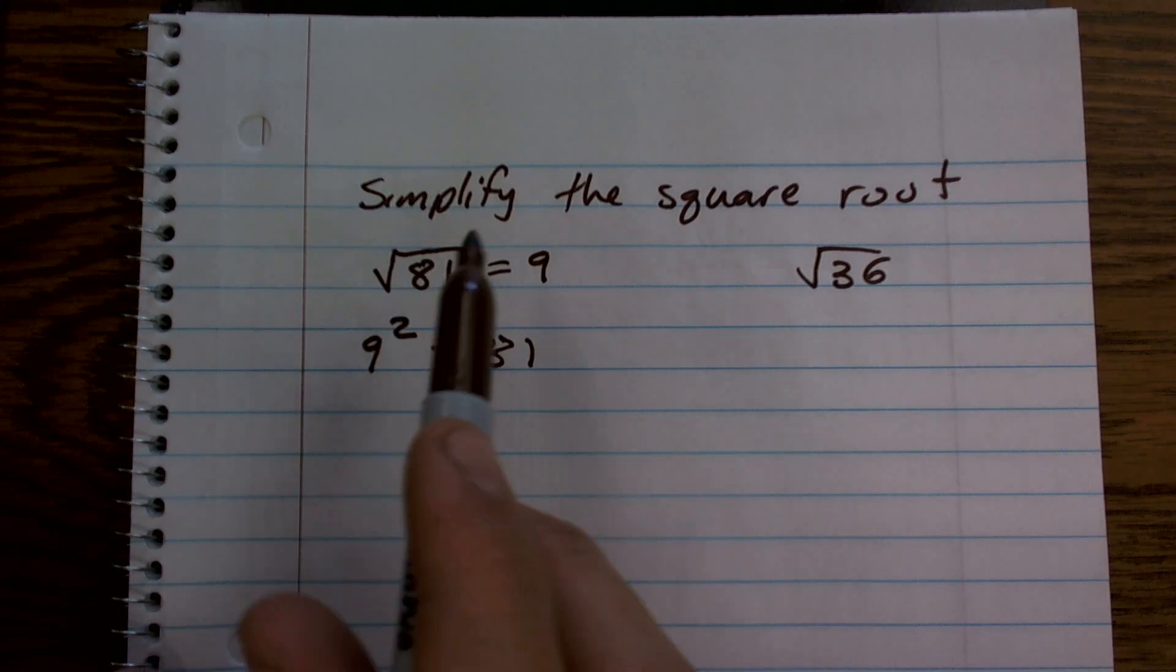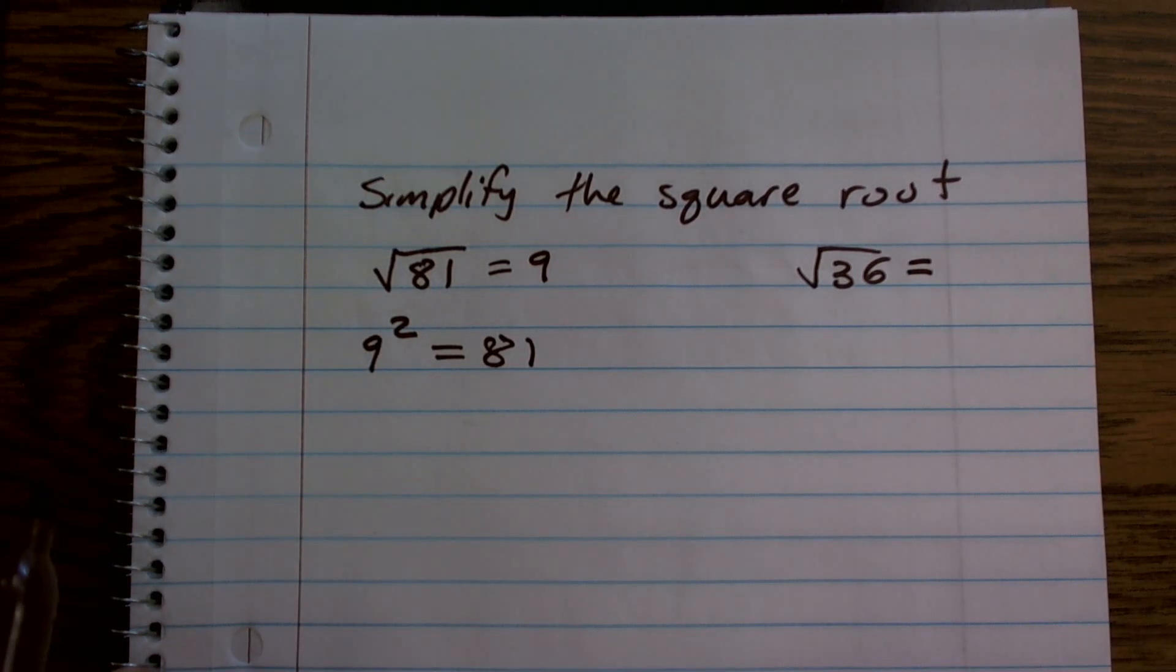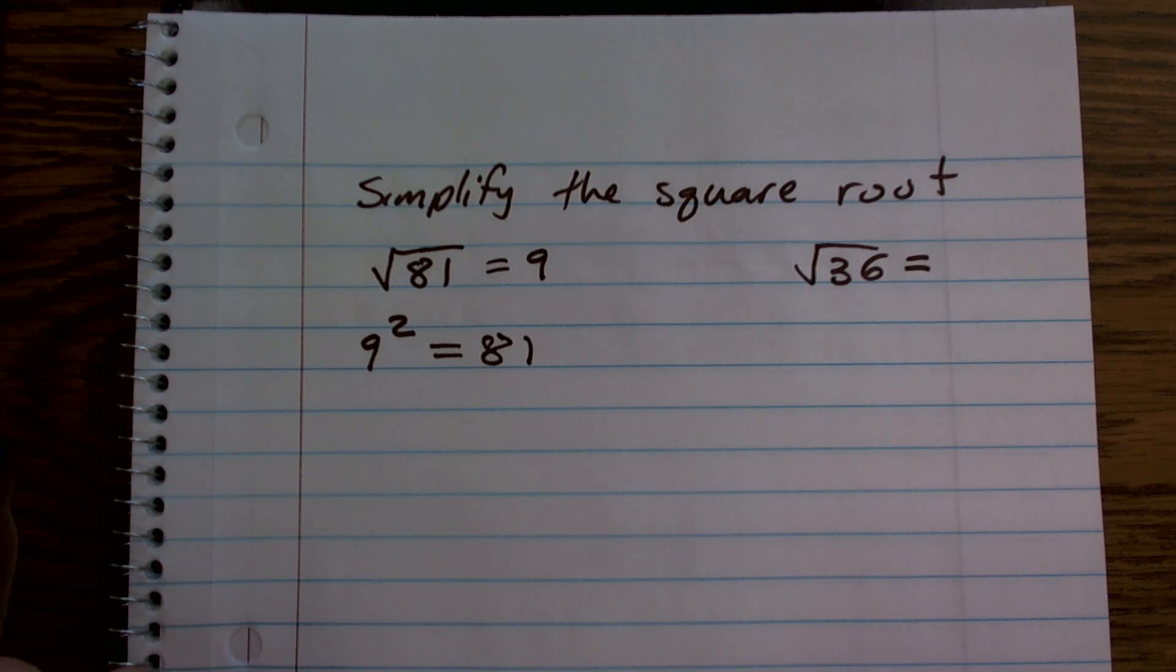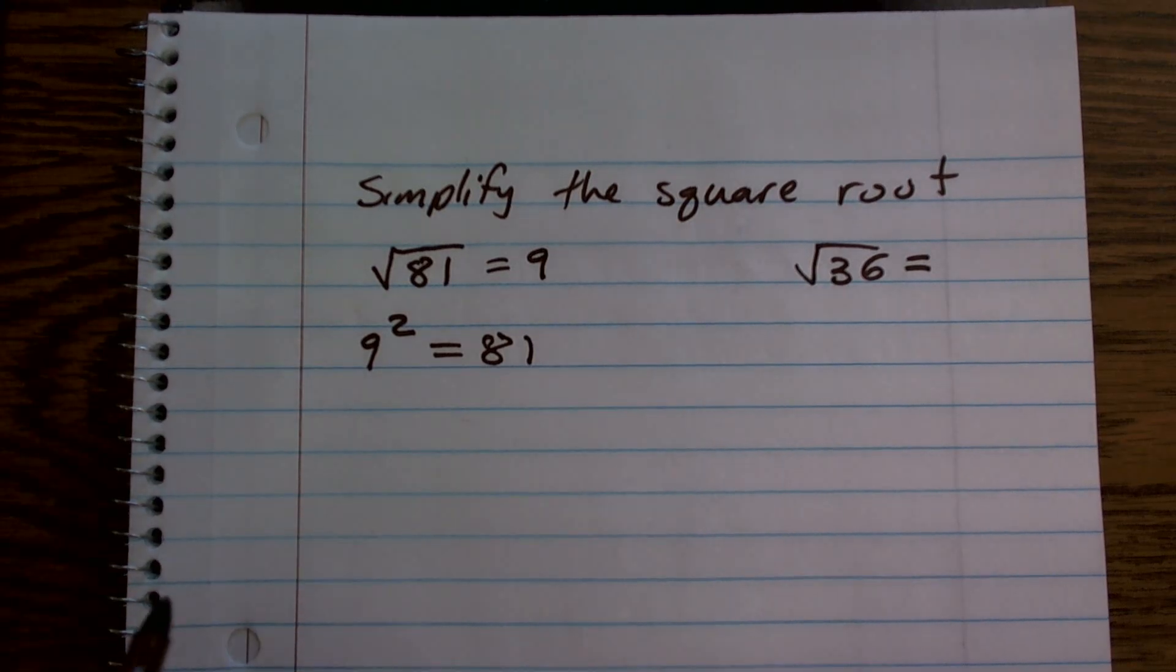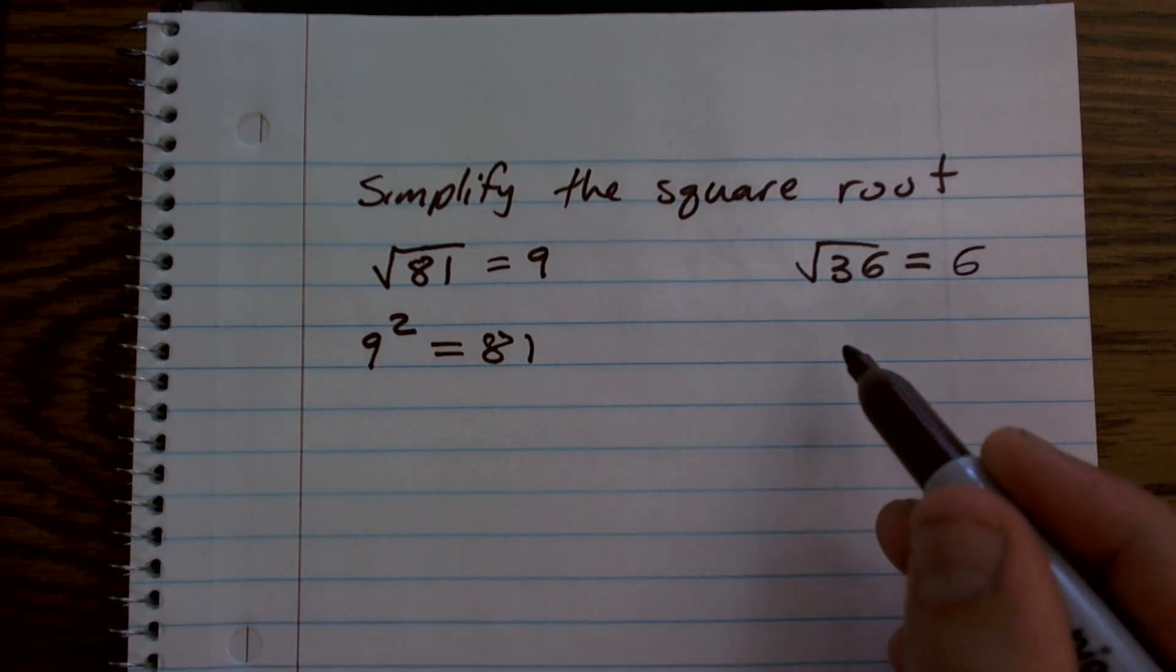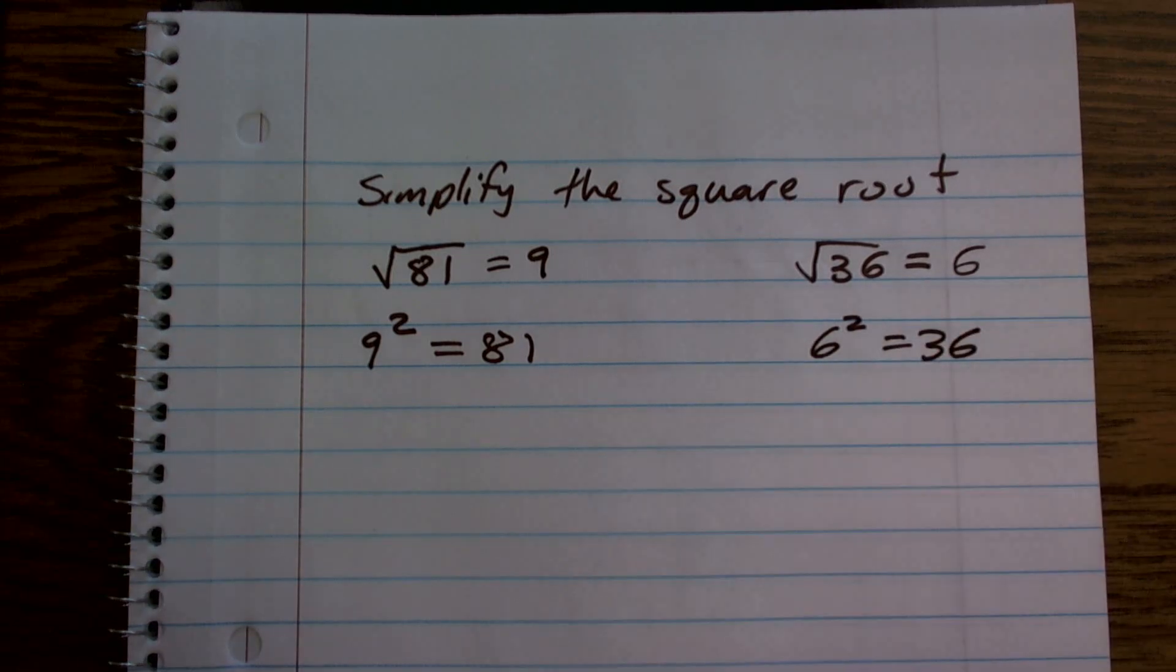Square rooting 81 equals 9. So then let's look at the square root of 36. What number multiplied by itself gives us 36? You can just think of ones that you know. 5 times 5 gives you 25. 7 times 7 gives you 49. But 25 and 49 are both off. And you end up looking at 6. 6 times 6 is 36. So let's check it. Does 6 squared equal 36? And yes, it does.